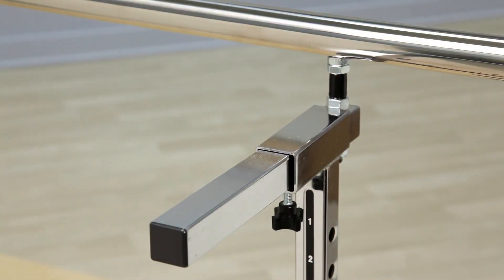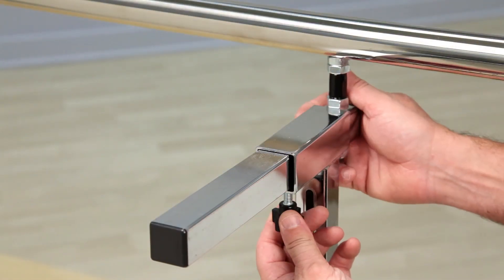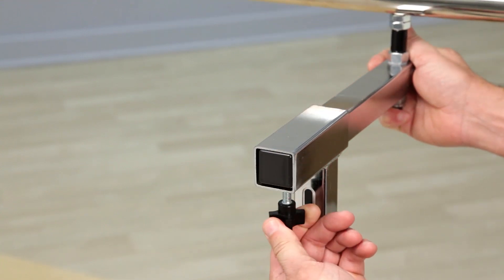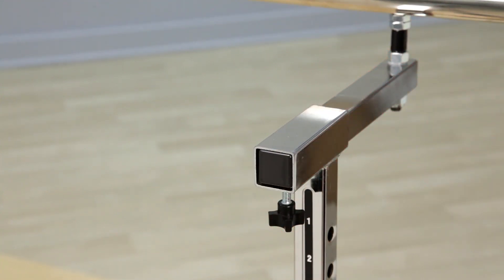Plus, Clinton parallel bars are adjustable two ways. Vary the space between the handrails by adjusting the width adjustments at the top of each post.